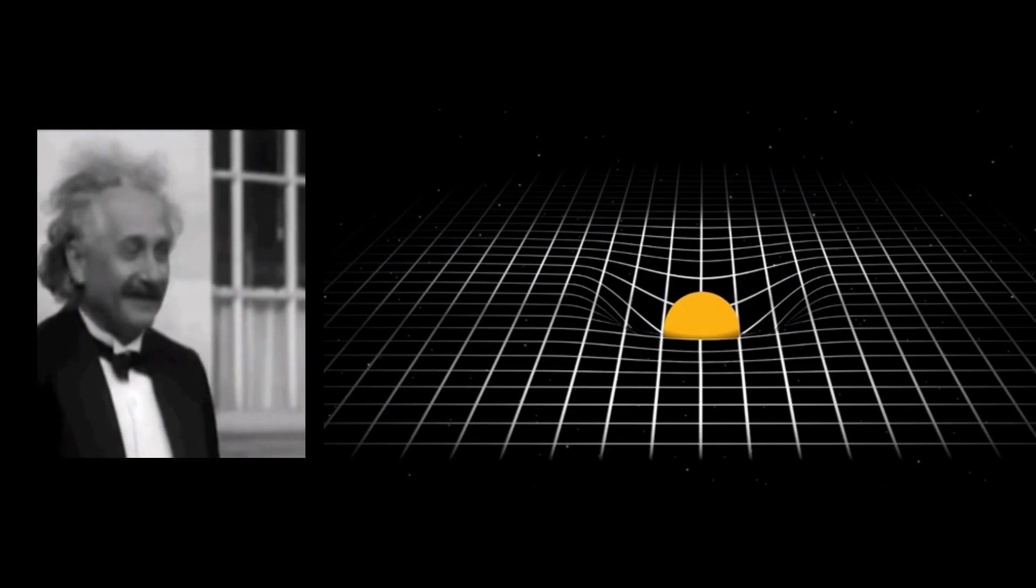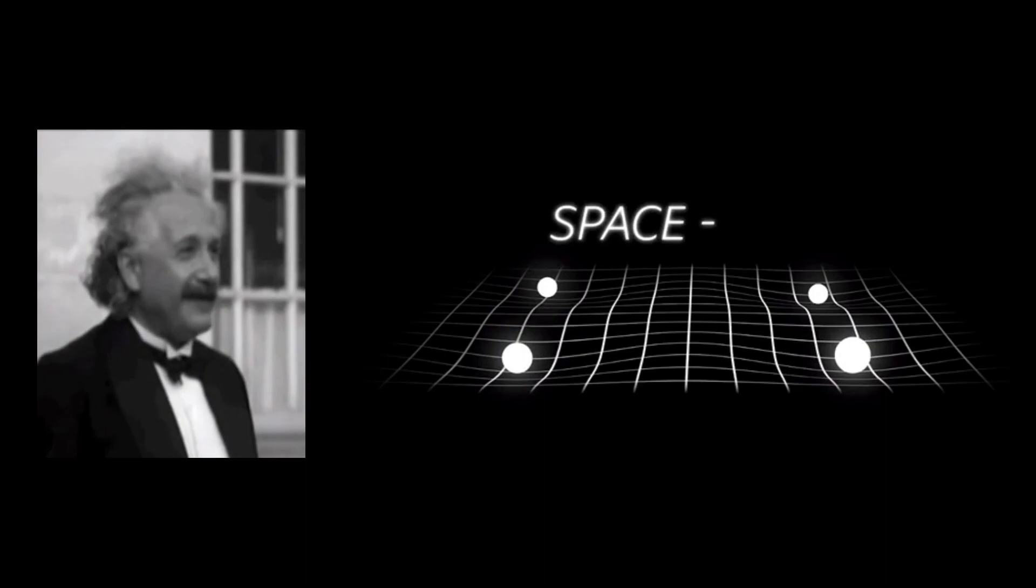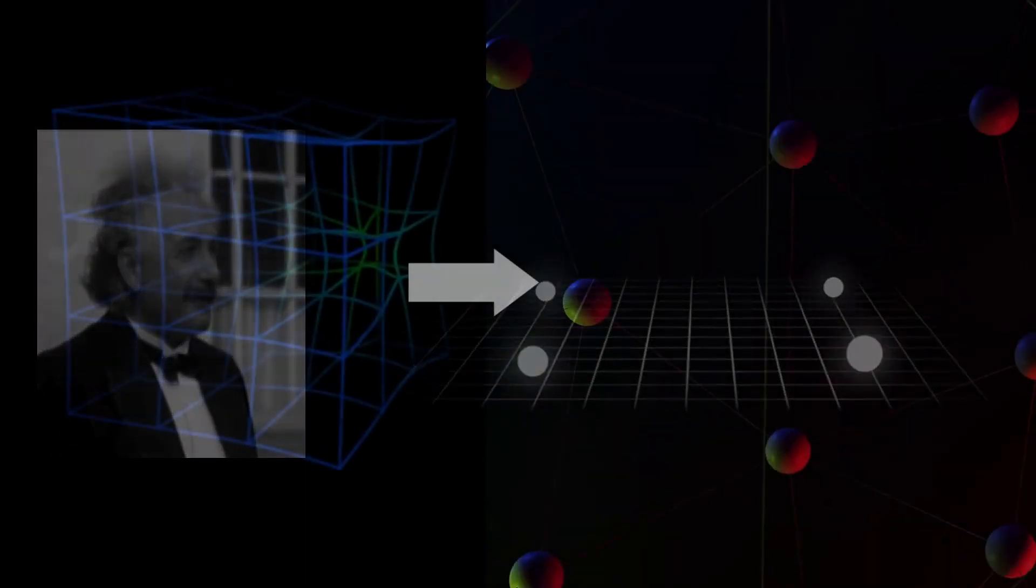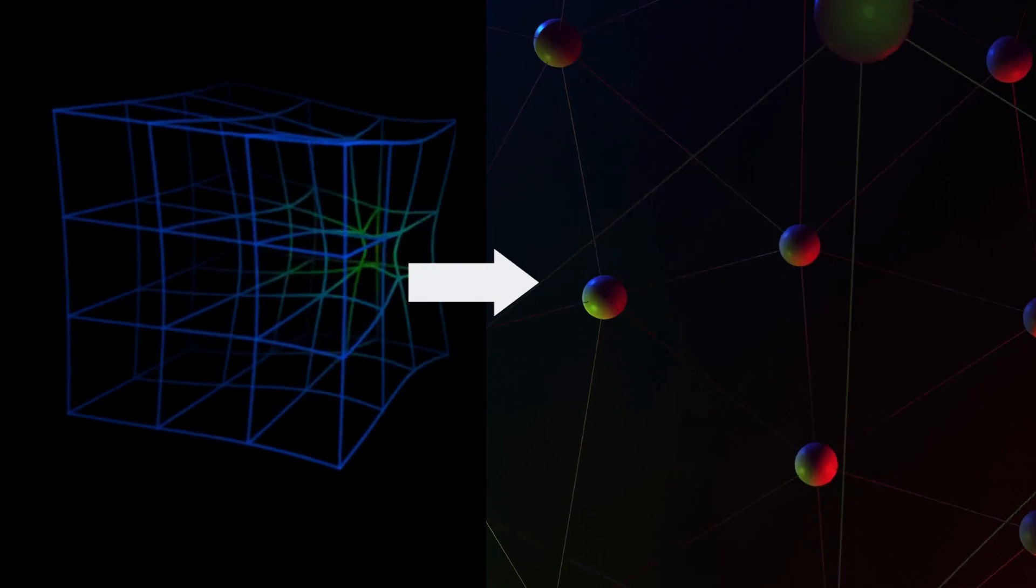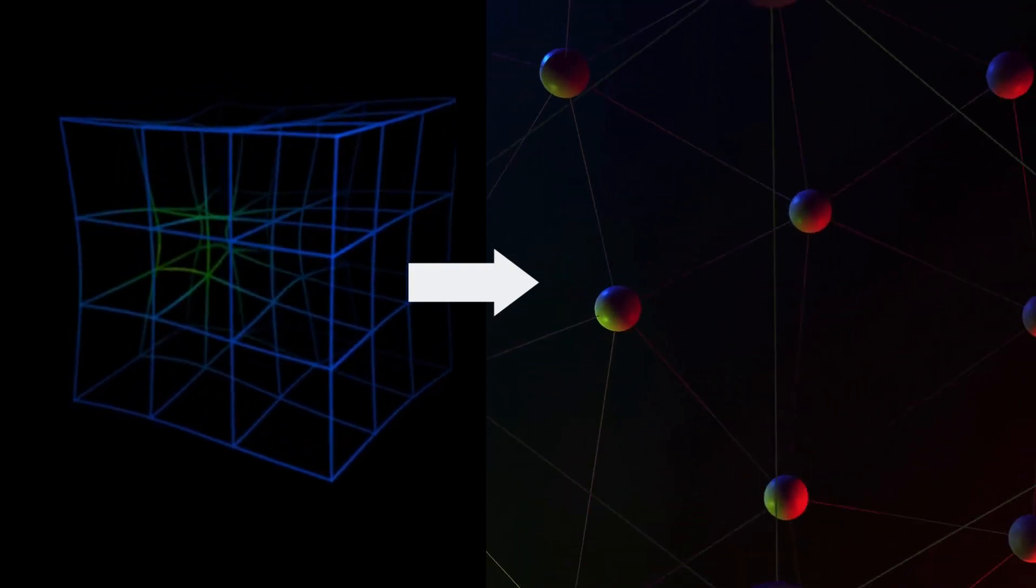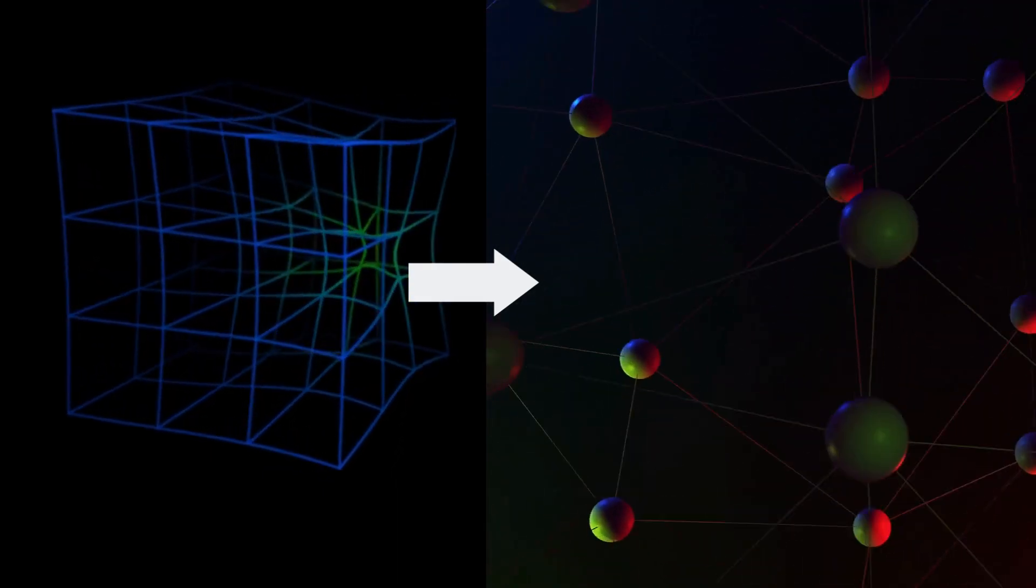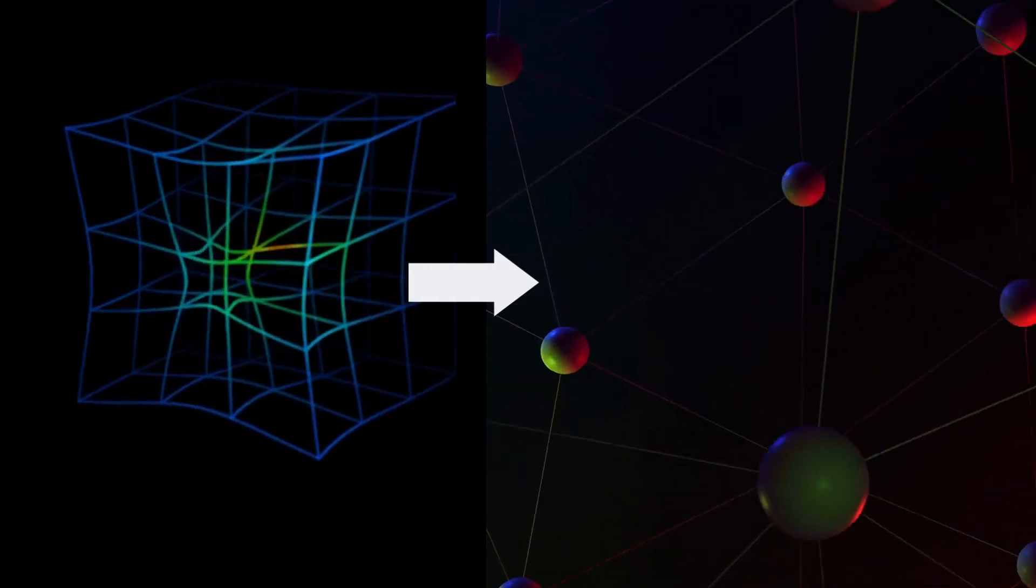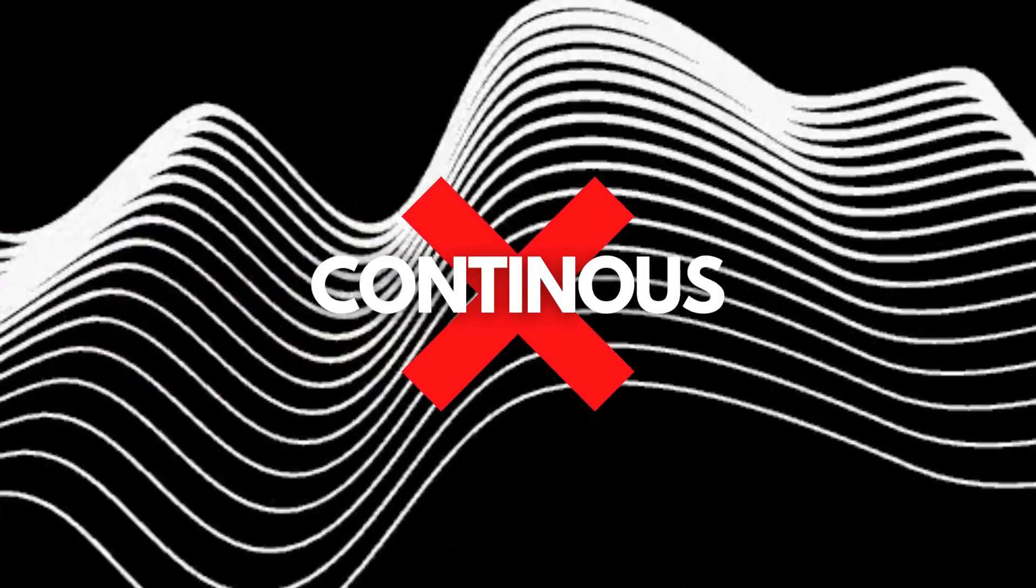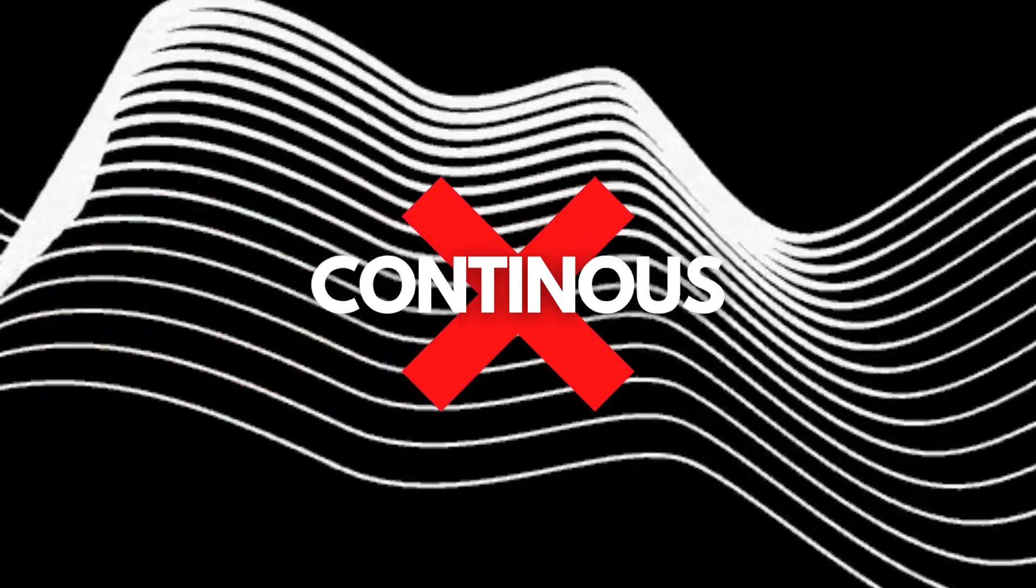Unlike string theory, loop quantum gravity seeks the theory of gravity by accepting the claims of general relativity as it is. If gravity is the mechanics of space-time, then we have to search for the quantum theory of space-time to arrive at the quantum theory of gravity. Loop quantum gravity tries to show that the fabric of space-time is not continuous, as Einstein assumed, but consists of discrete quanta.